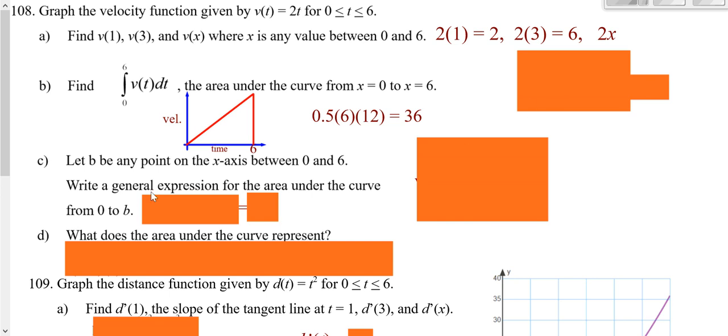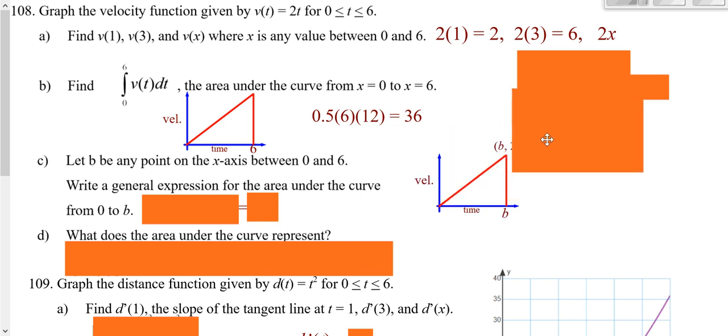Now you're asked to go ahead and do this again, but instead of going to 6, go from 0 to b. Well, it's still a triangle shape. Your base would go from 0 to b, so it'd be one half times b.